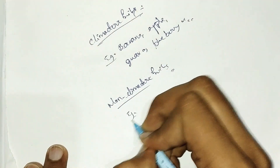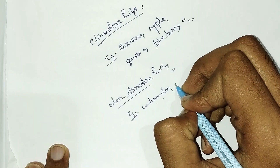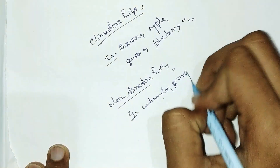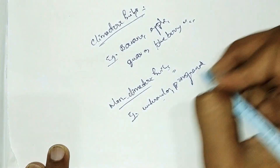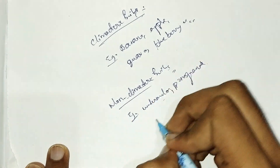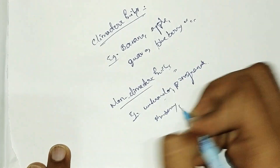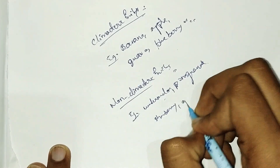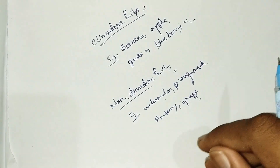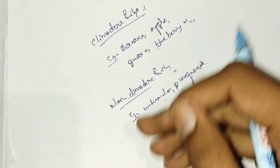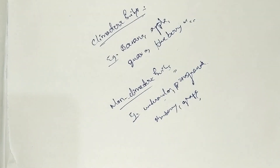Example: watermelon, puchakaya, pomegranate, danimol, strawberry, grapes. So these are the differences between climacteric fruits and non-climacteric fruits. Thank you.